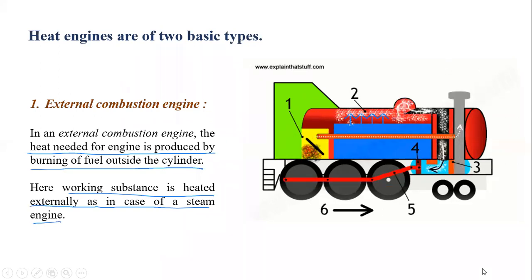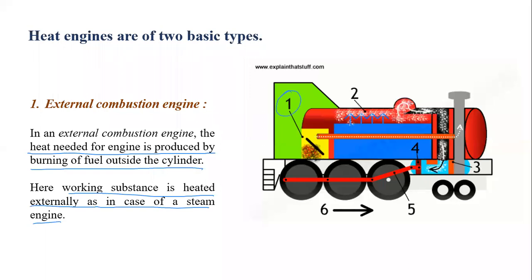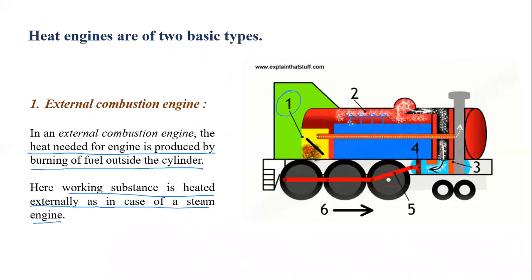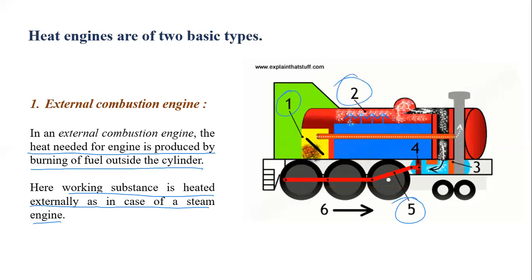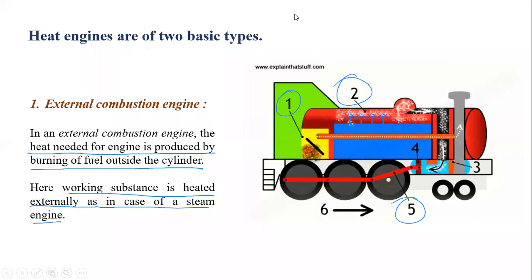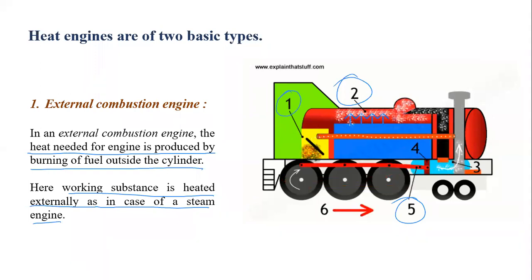In a steam engine, the working substance is heated externally. That heat is given to water, which displaces the piston and does work. Steam is produced — heat is given to water, water produces steam, and that steam is used to move the piston, doing mechanical work.